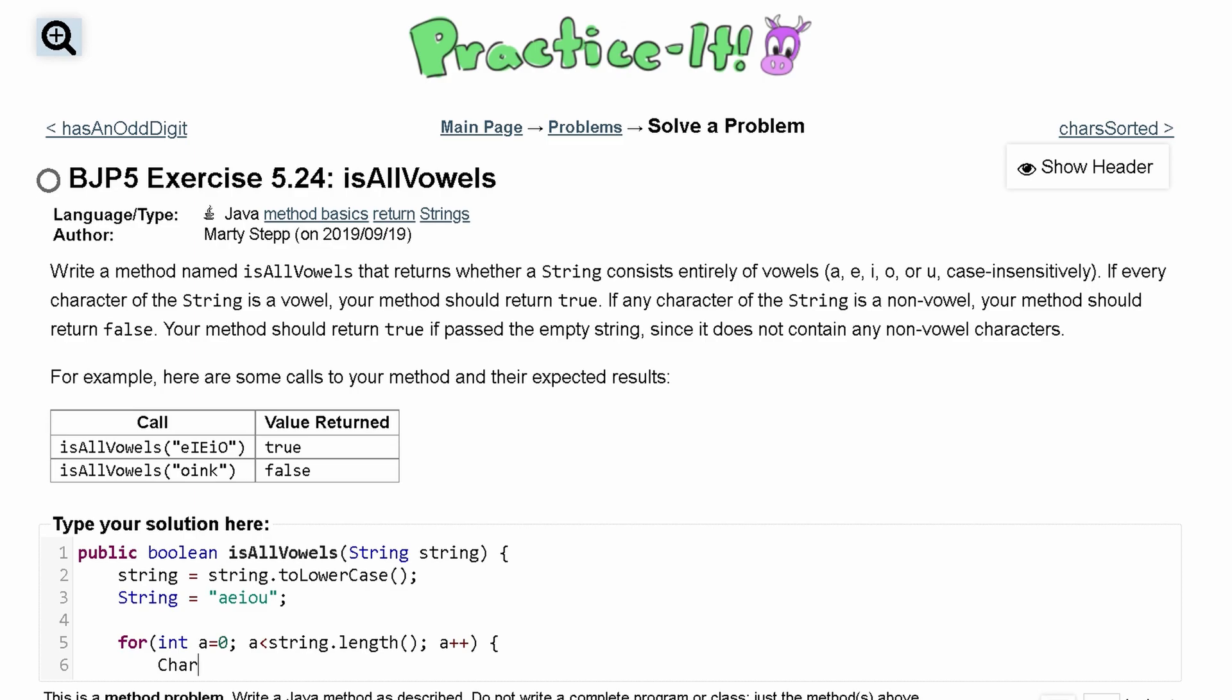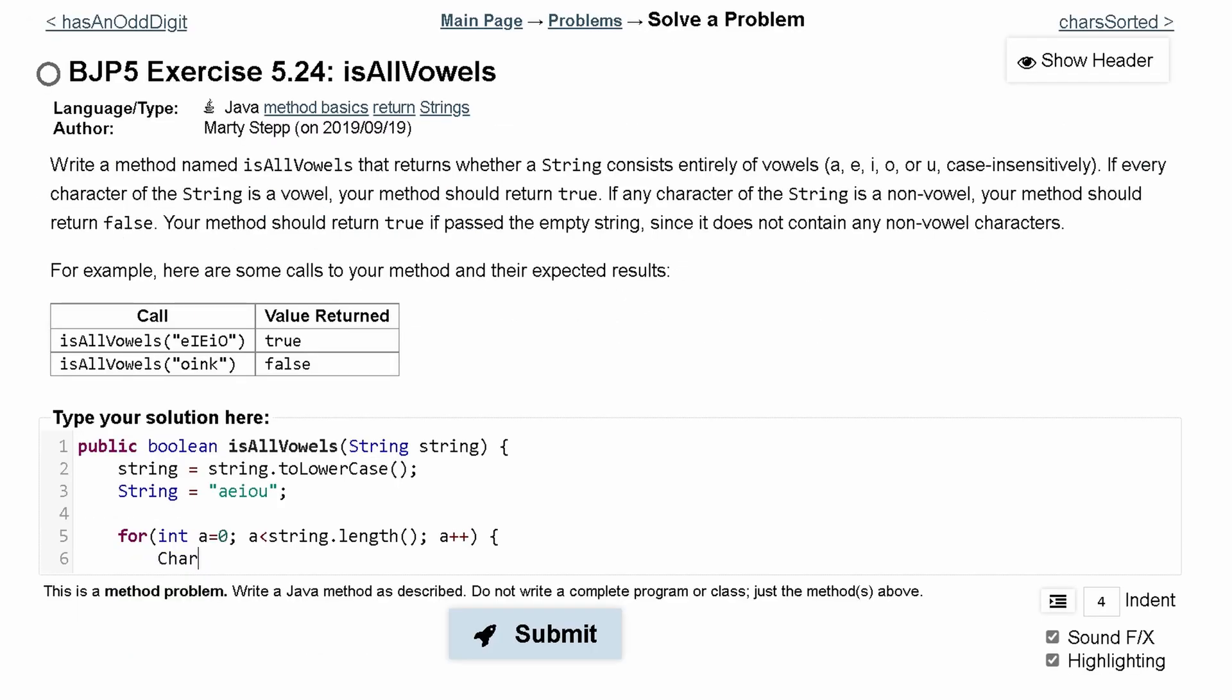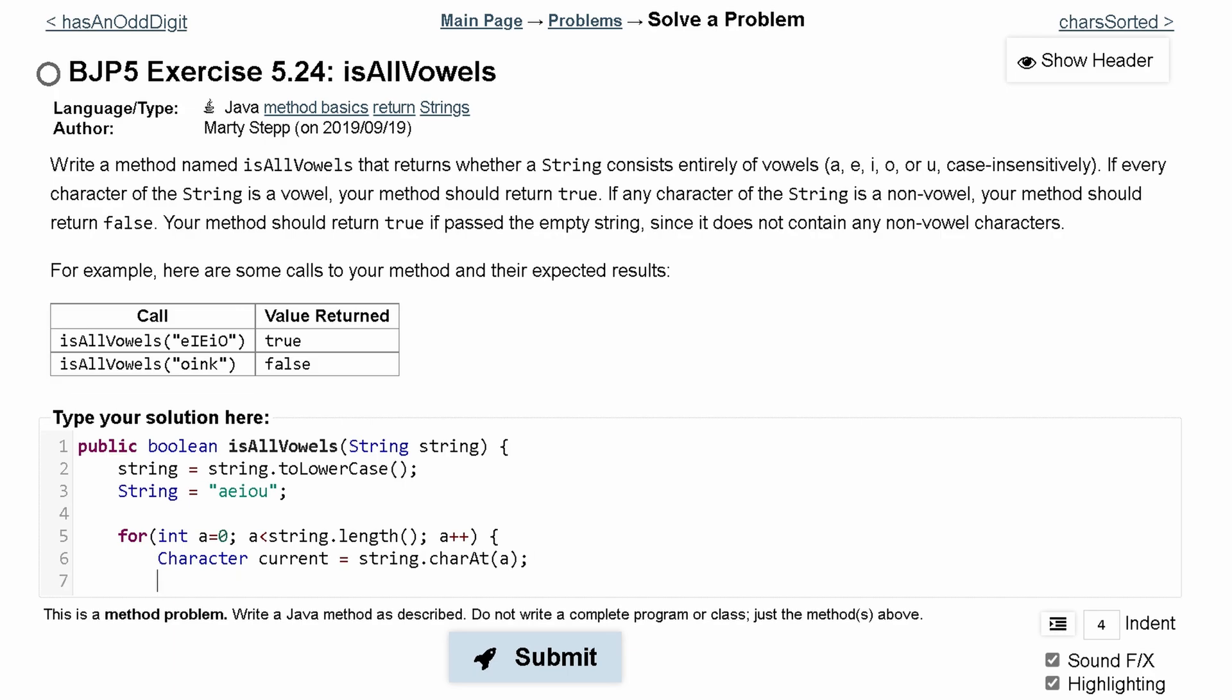In some iterator for loop, we're going to make a new character, and we're going to get whatever character in our string, and we're going to look at that. We're going to do character, we'll call it current, and we'll set it equal to string dot charAt at the specific index.